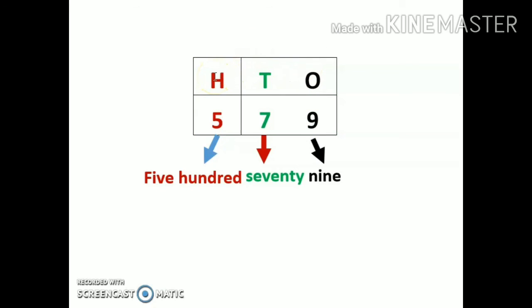For example, 5 is written under hundreds, so I will write five hundred. And same with these numbers, 79. So the number will become 579. We will discuss about number names in the next module. Thank you.